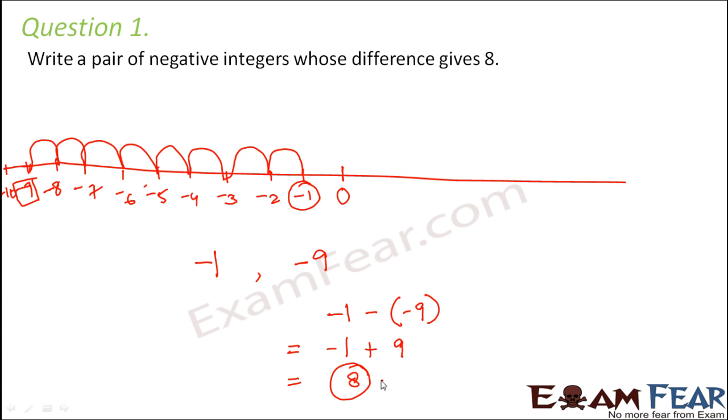And this is what we wanted. So that pair of negative integers that we chose were minus 1 and minus 9. Now, it is not necessary that this is the only possible answer.